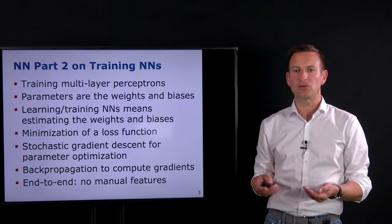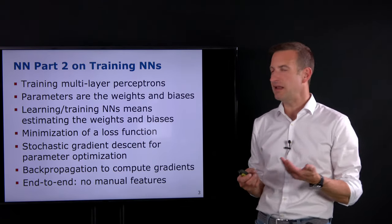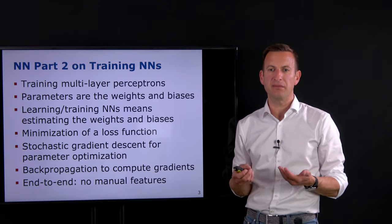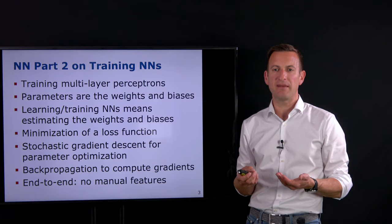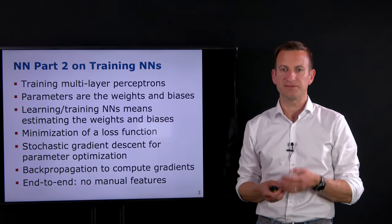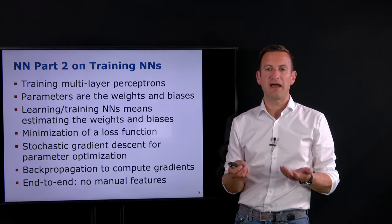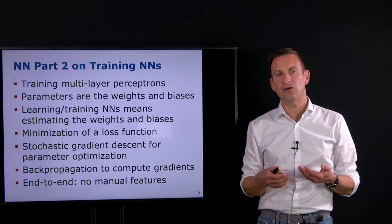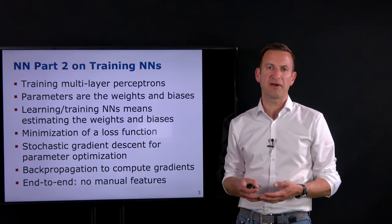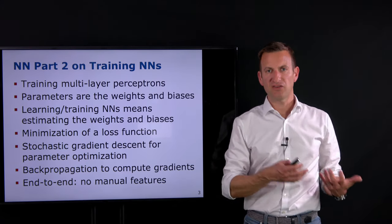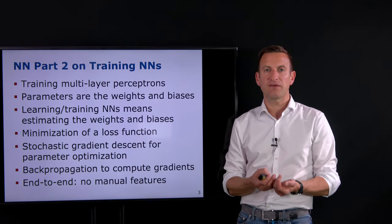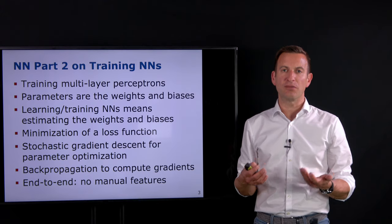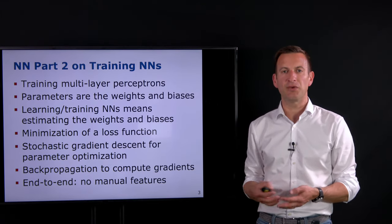In the second part on neural networks, we looked into how to train neural networks — how to perform the learning tasks — and looked into training these MLPs. Training means providing positive and negative training examples and adapting the parameters, weights, and biases of a network so that it actually solves the tasks we want to solve. Basically it means finding the weights and biases based on training examples, and it boils down to minimizing a loss function.